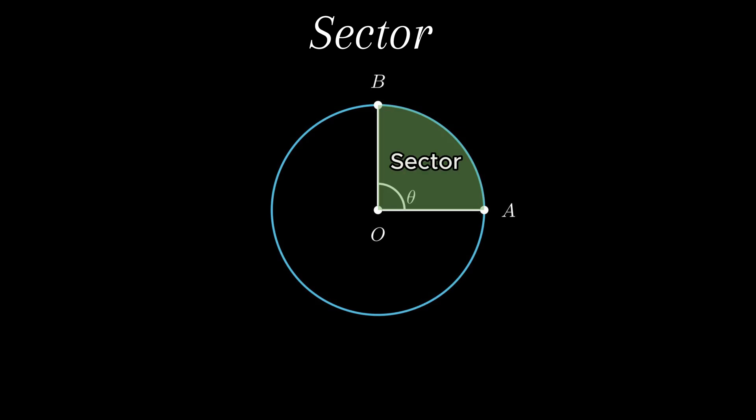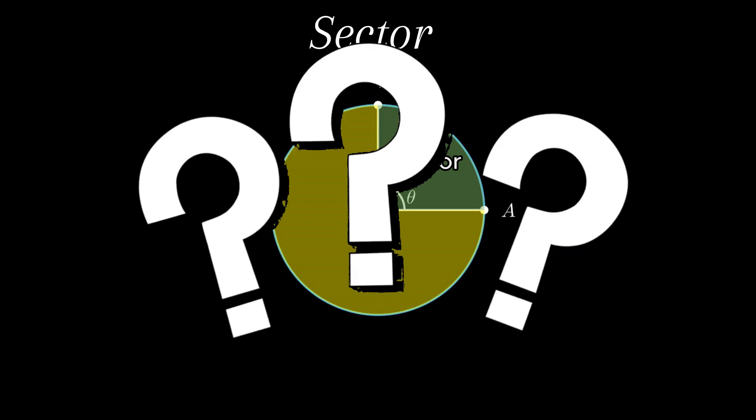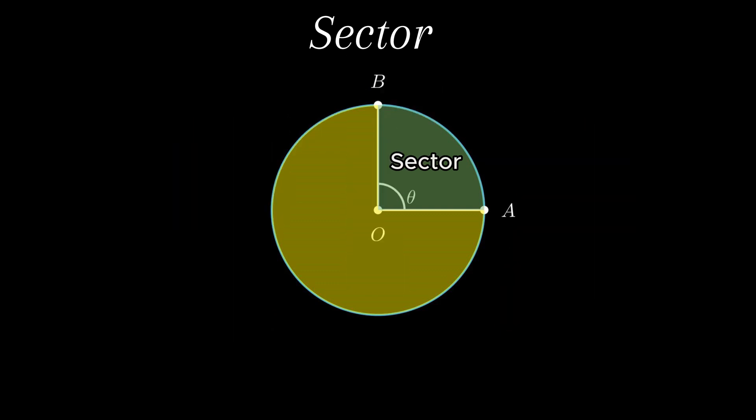But what about the remaining area? The answer is that it is still a sector. To remove the confusion, these are classified as major sector and minor sector. As the names suggest, the sector with the larger area is called the major sector and the sector with less area is known as the minor sector.